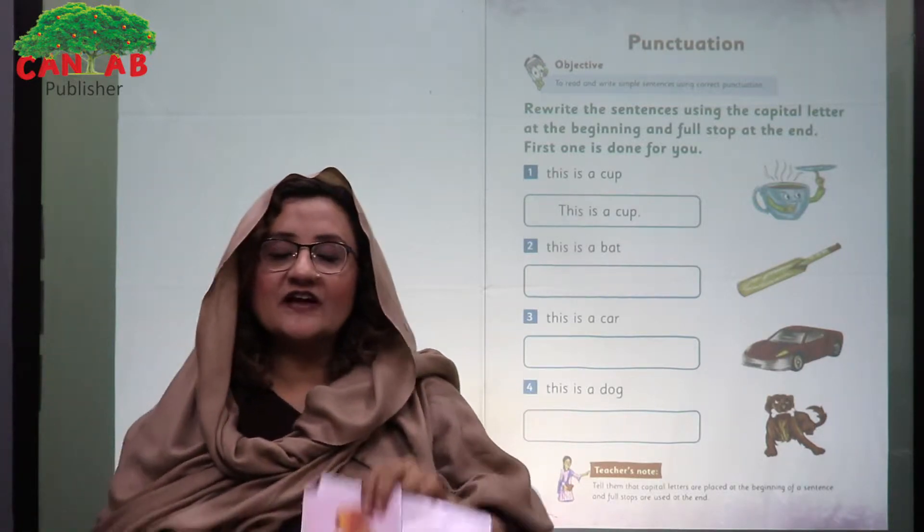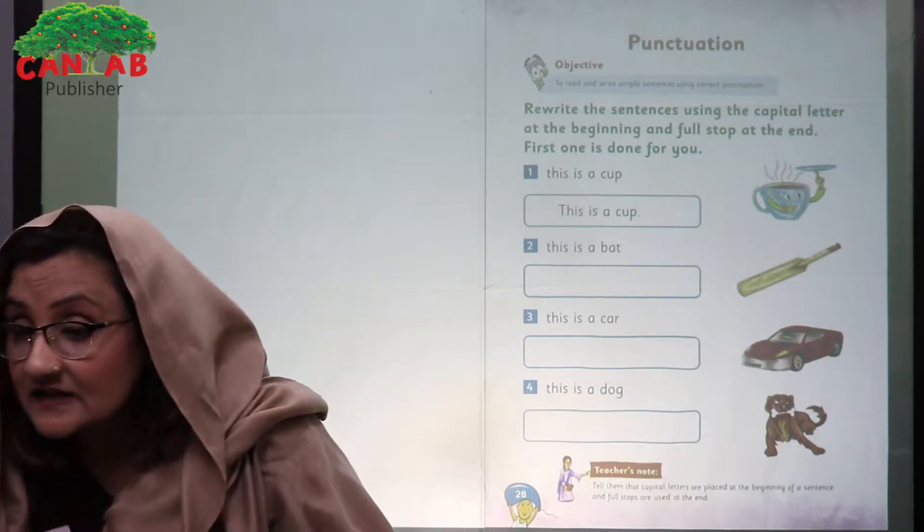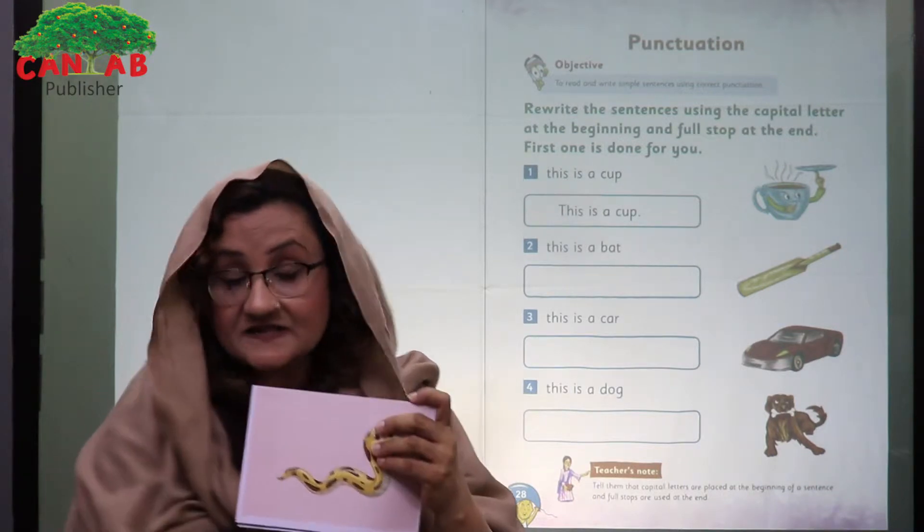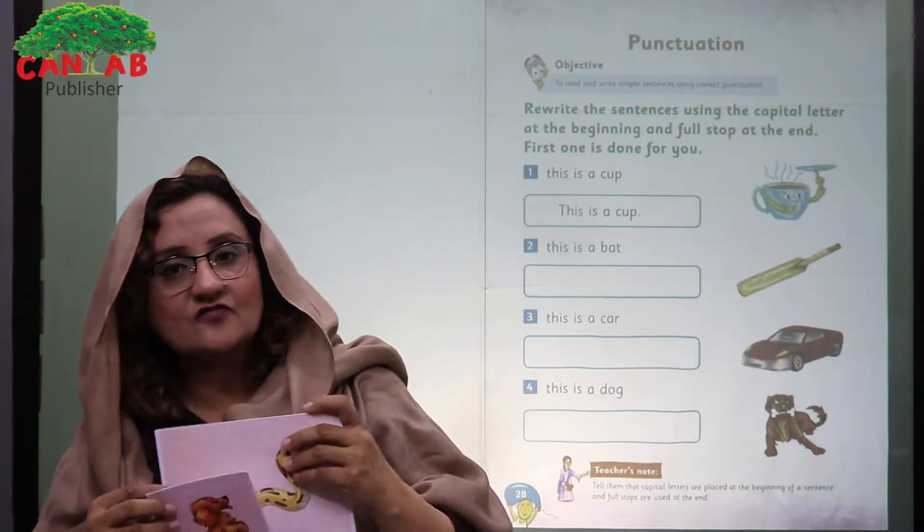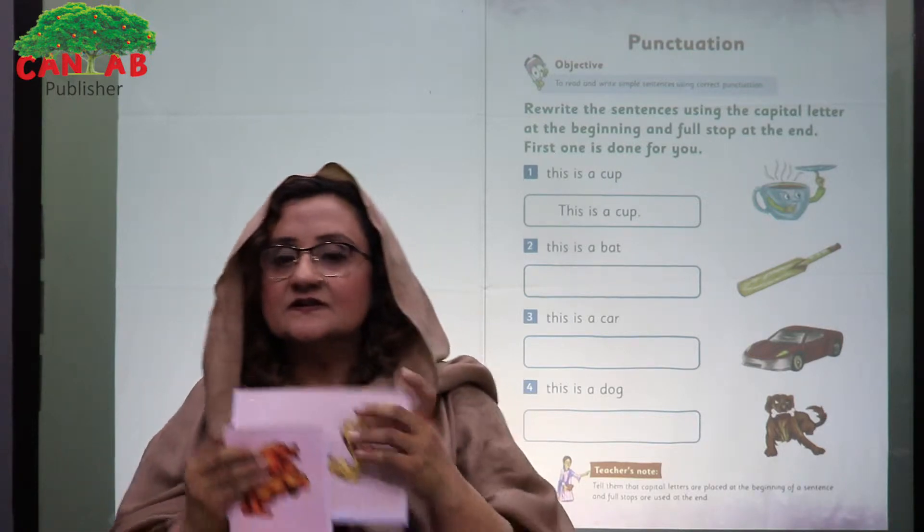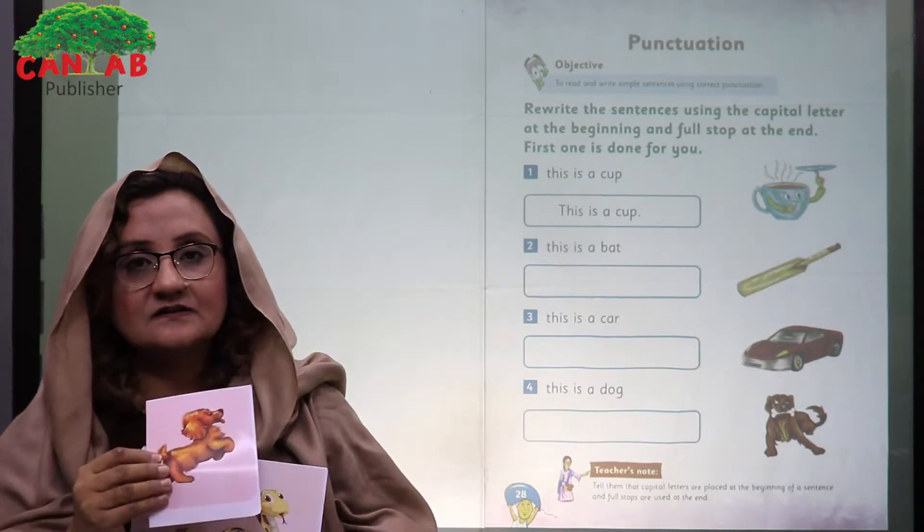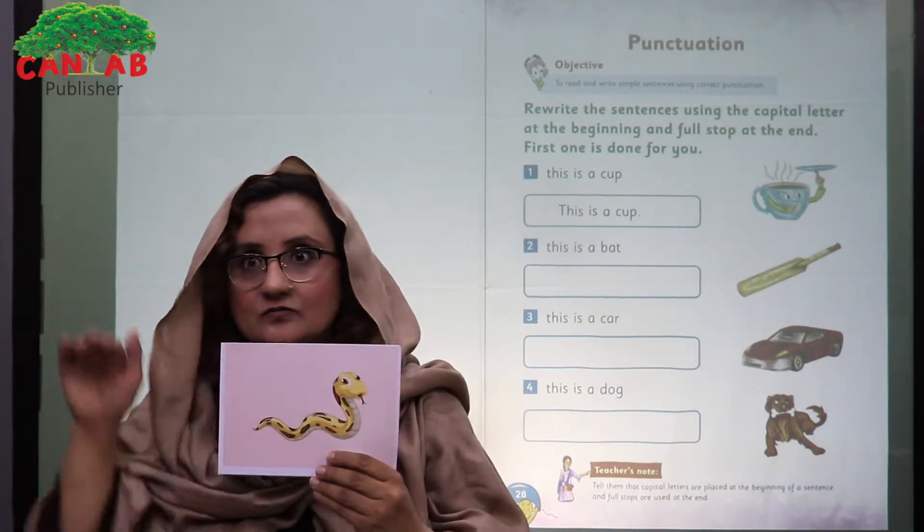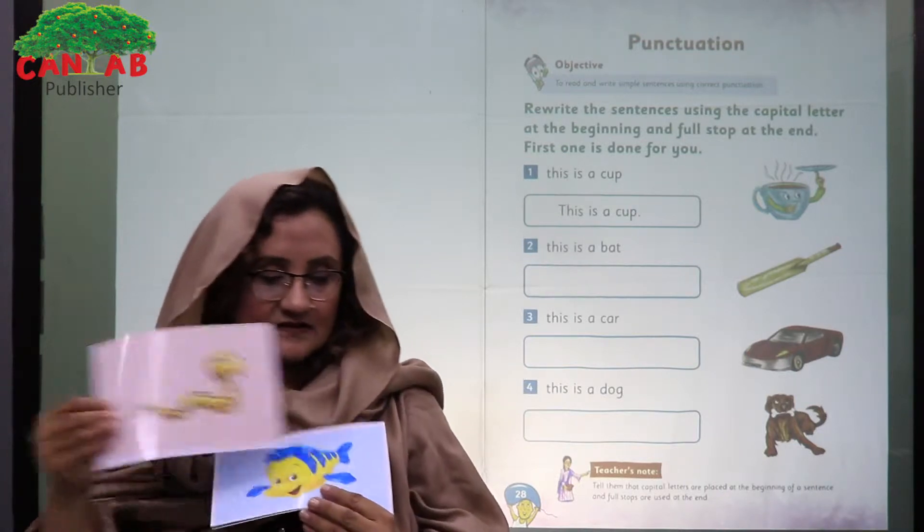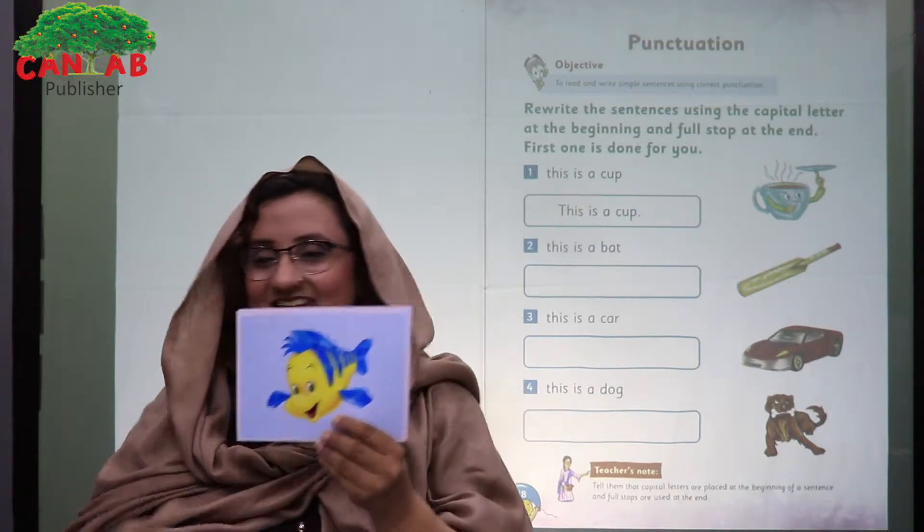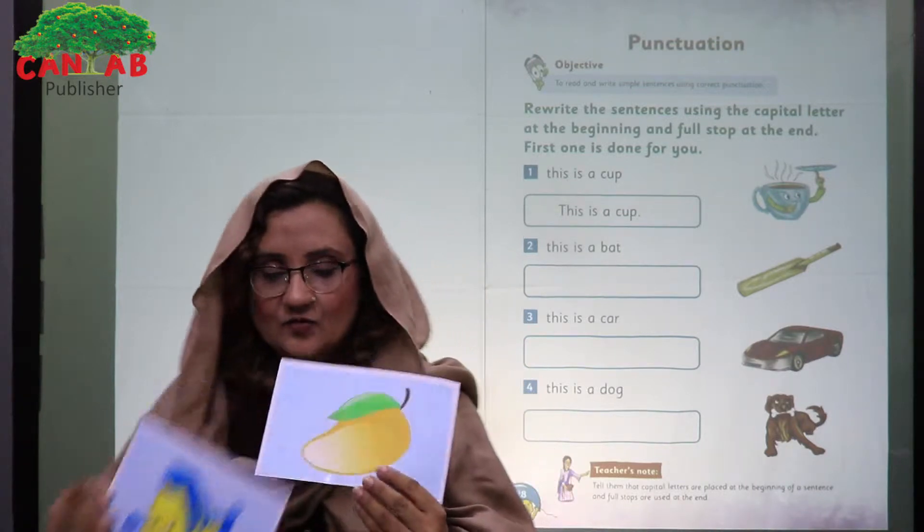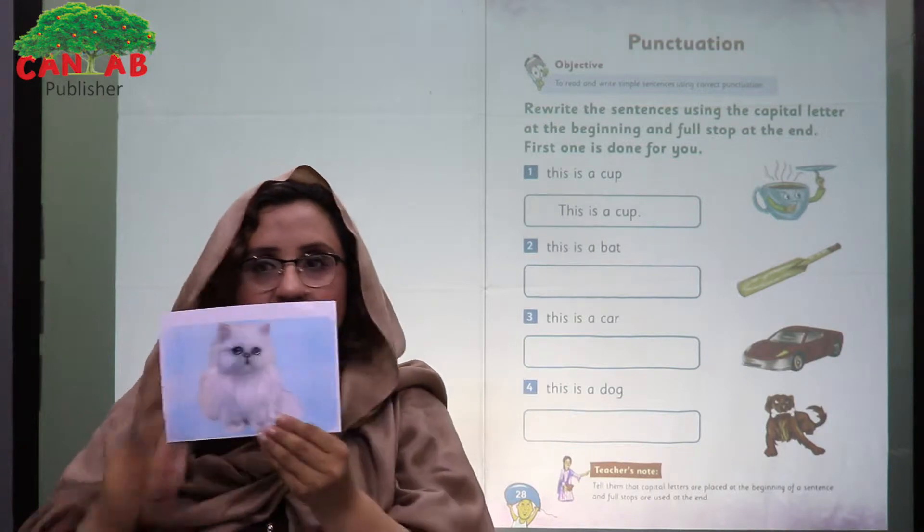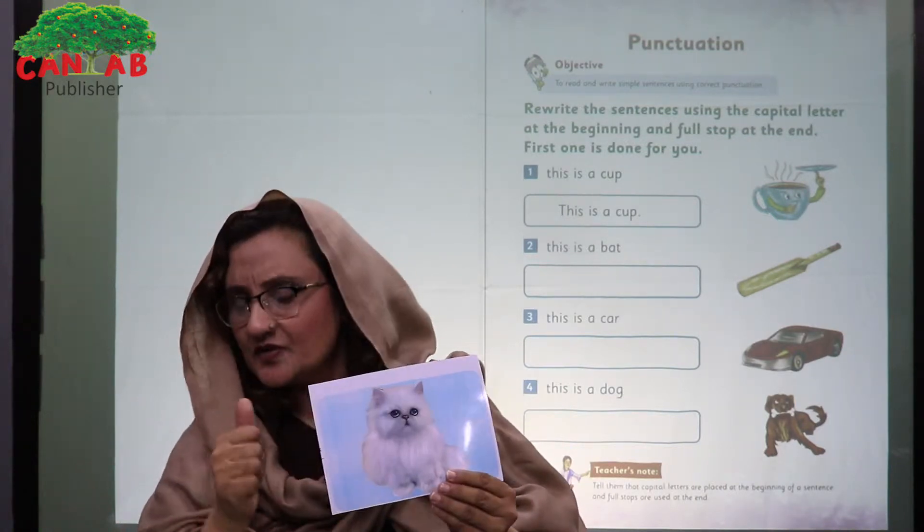Student, what is this? This is a dog. Very good. And what is this? This is a snake. What is this? This is a fish. And what is this? This is a mango. What is this? Meow meow. This is a cat. Very good.